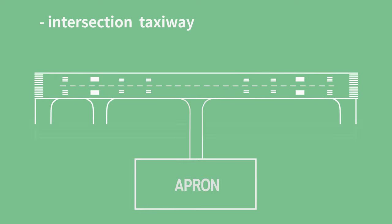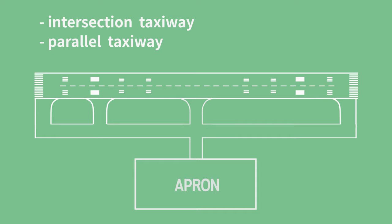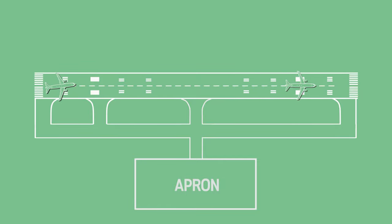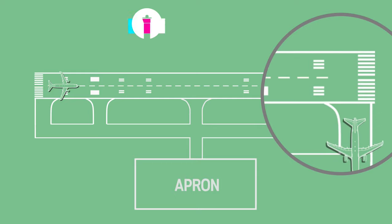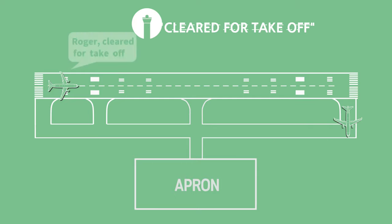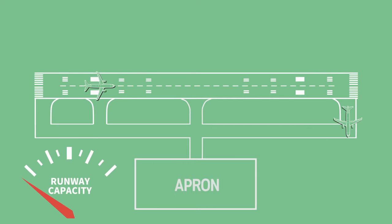Intersection taxiway and parallel taxiway are added to reduce runway occupancy time due to the backtrack. As a result, the departing aircraft can start takeoff roll as soon as the landing aircraft vacates the runway. Naturally, the runway capacity increases.